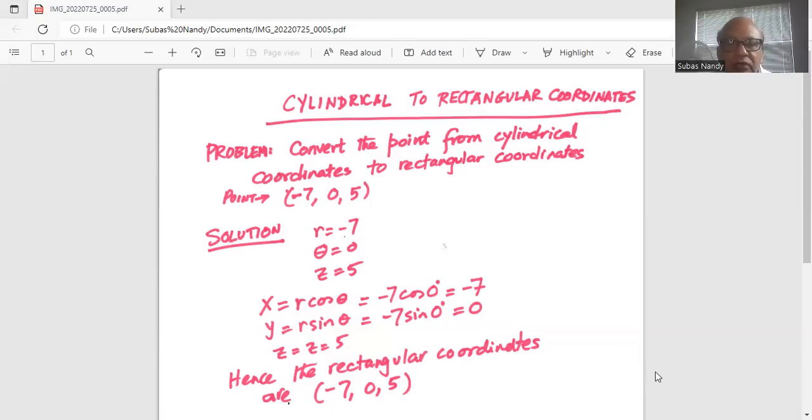Hence the rectangular coordinates for the same points are also minus seven, zero and five.